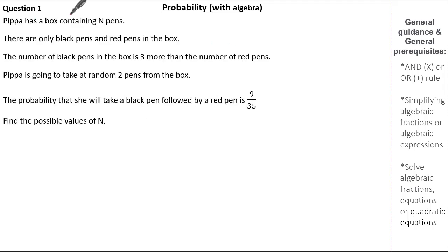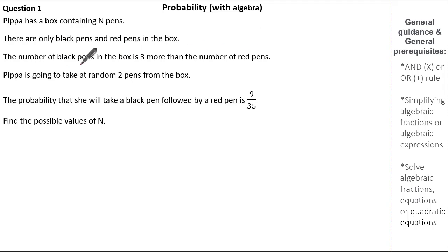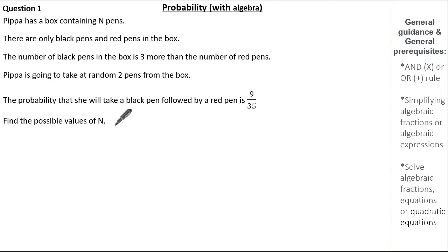Here it says Pippa has a box containing n pens. There are only black pens and red pens in the box. The number of black pens is 3 more than the number of red pens. Pippa is going to take at random 2 pens from the box. We know the probability that she'll take a black pen followed by a red pen is 9 over 35, and we're asked to find the possible values of n.